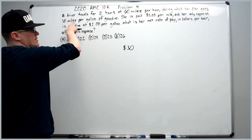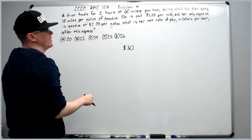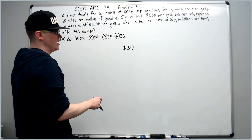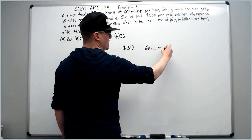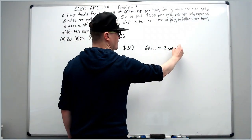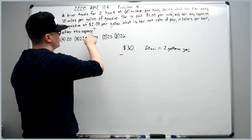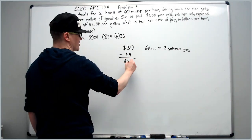Then her only expense is gas, which costs her $2 per gallon, and she gets 30 miles per gallon of gas. So if she goes 60 miles, that's going to equal two gallons of gas. And we can simply subtract two times $2, which is $4, to get 26.